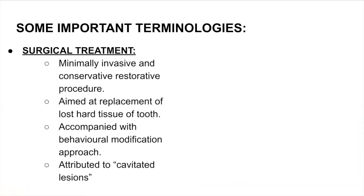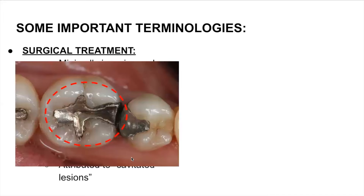Next is surgical treatment. When we're talking about surgical treatment in caries classification, we're talking about a minimally invasive and conservative restorative procedure. It is aimed at replacement of lost hard tissue of the tooth, such as enamel, dentin, or cementum, and it's accompanied with a behavioral modification approach — better brushing techniques, flossing, and oral health approaches. It's attributed to cavitated lesions only. We know it's surgical because we took time to prepare this cavity and fill it with silver amalgam.